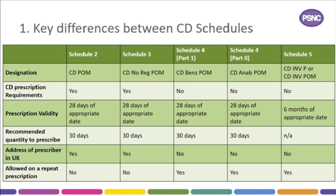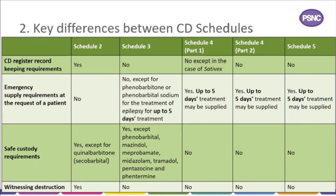Schedule 2 and 3 CDs cannot be prescribed on repeatable prescriptions. Only Schedule 4 and 5 CDs are permitted on repeatable prescriptions. Repeat dispensing prescriptions for Schedule 4 CDs must be dispensed for the first time within 28 days of the appropriate date. On record keeping requirements, records of Schedule 2 CDs are required to be kept in a CD register. The Home Office strongly recommends the use of a CD register for records relating to Sativex. For Schedule 3 CDs, records and registers do not need to be kept although there are requirements for the retention of invoices for 2 years. For Schedule 4 CDs there is no requirement to keep records and registers except in the case of Sativex spray. Schedule 5 CDs are exempt from any record keeping requirements but retention of invoices for 2 years is required.